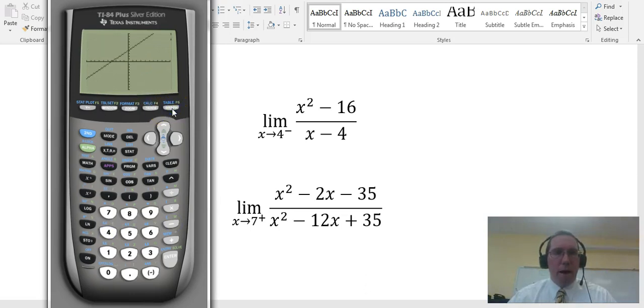And so now this is the graph of x squared minus 16 over x minus 4. And we want to know what the limit of this function is as x is approaching 4 from the left side. So that's wherever x is 3.9, then 3.99, then 3.999. And so what we're going to do is we're going to use this trace button right here.